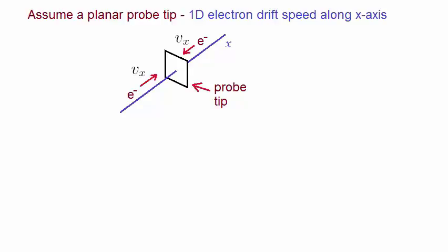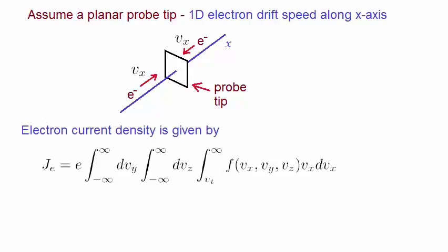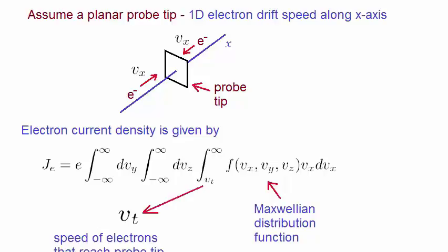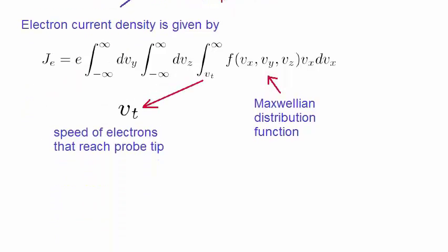The electron current density on the probe tip is given by this expression, where, as you'll notice, the velocity component Vx has been explicitly included, because it is a one-dimensional problem. F is the distribution function that we'll take to be the Maxwellian distribution, and Vt is the speed of the electrons that reach the probe tip.